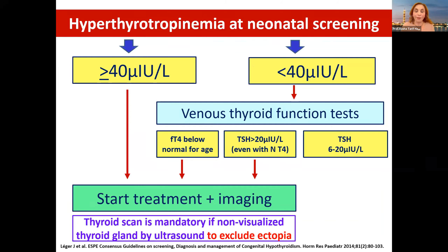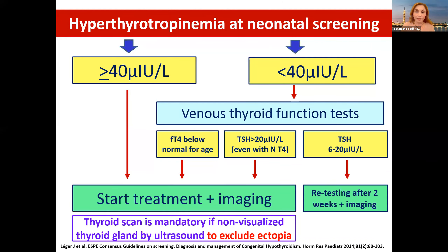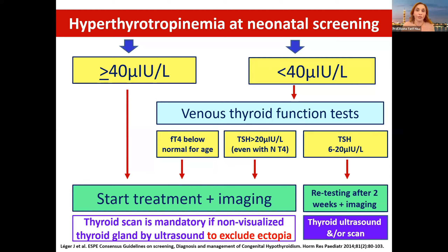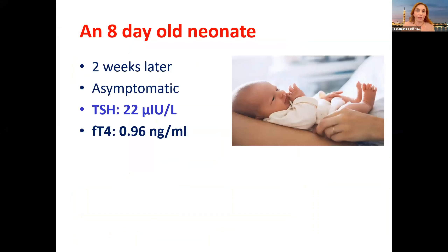What about the gray zone — the most difficult? If TSH is from 6 to 20, retest thyroid function after two weeks and do imaging to make sure there are no thyroid anomalies by ultrasound and scan. These are the proposed guidelines by ESPE.